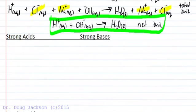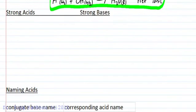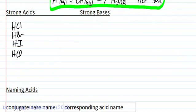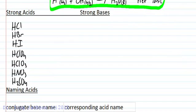There are 7 strong acids: HCl, HBr, HI, HClO4, HClO3, HNO3, and H2SO4.